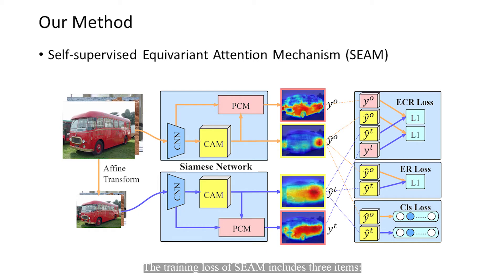The training loss of SEAM includes three items. The first one is classification loss, which guides the learning of CAMs on both branches. The second one is equivariant regularization loss, which regulates the consistency between CAMs mentioned above.